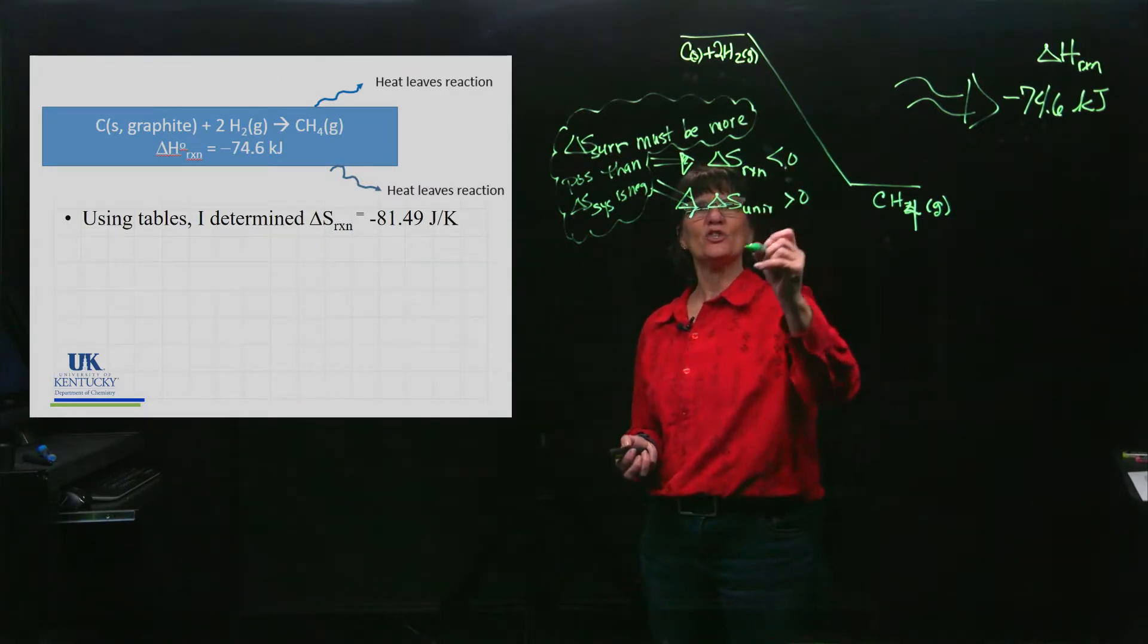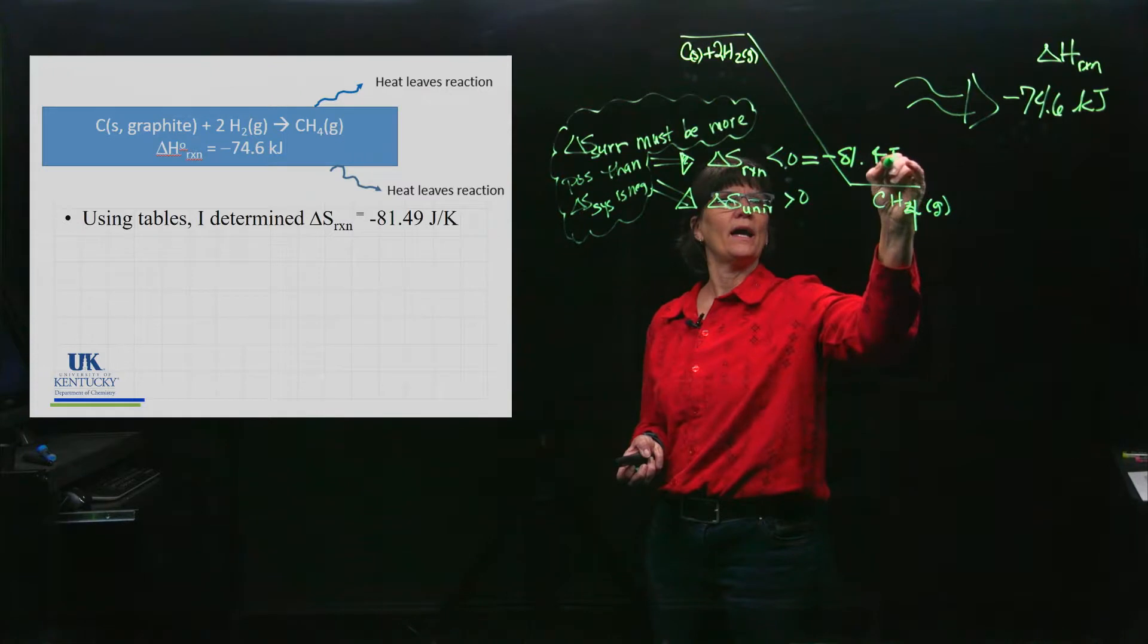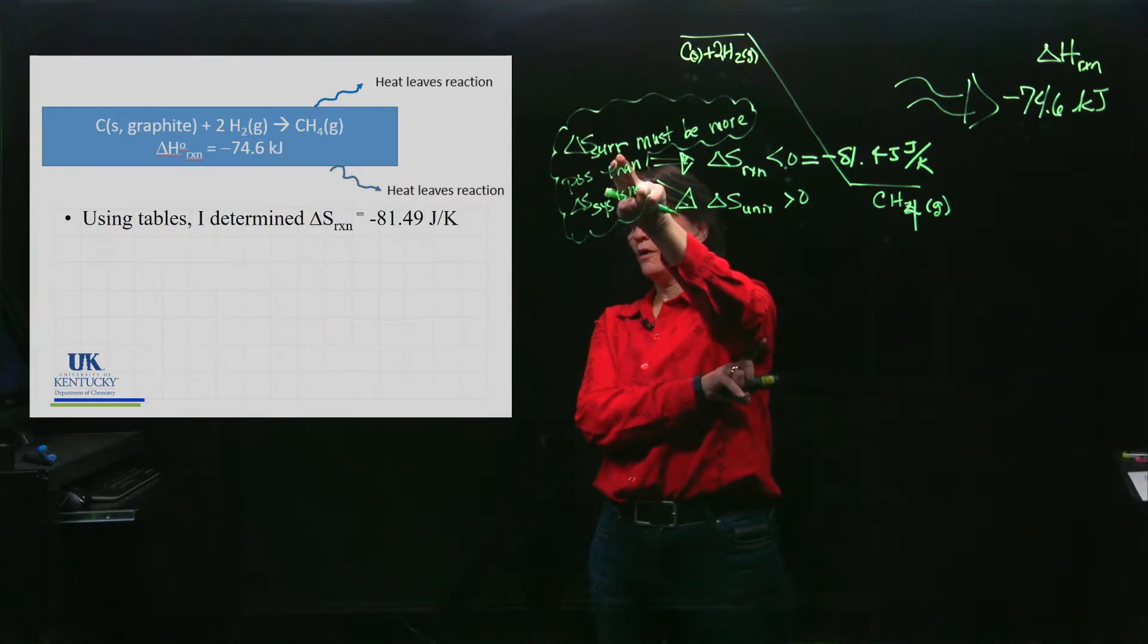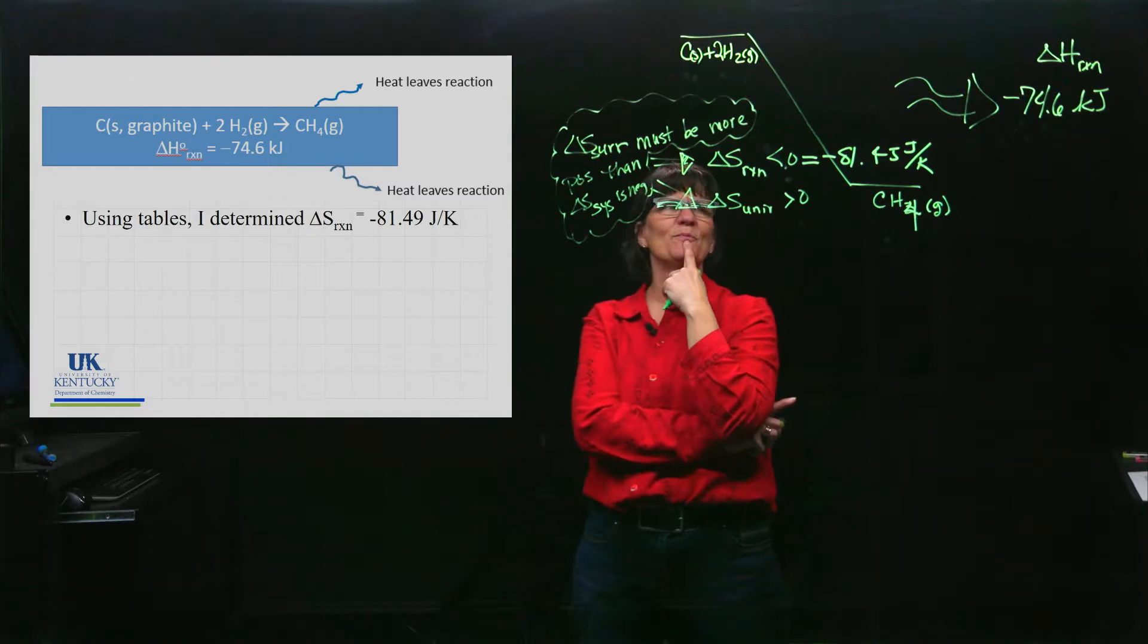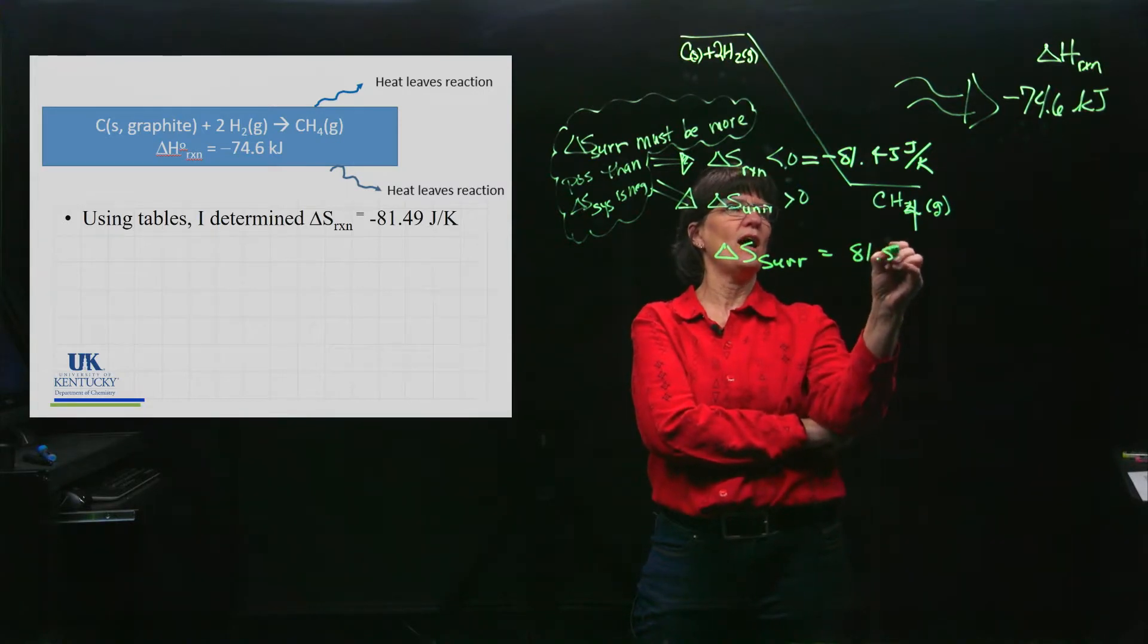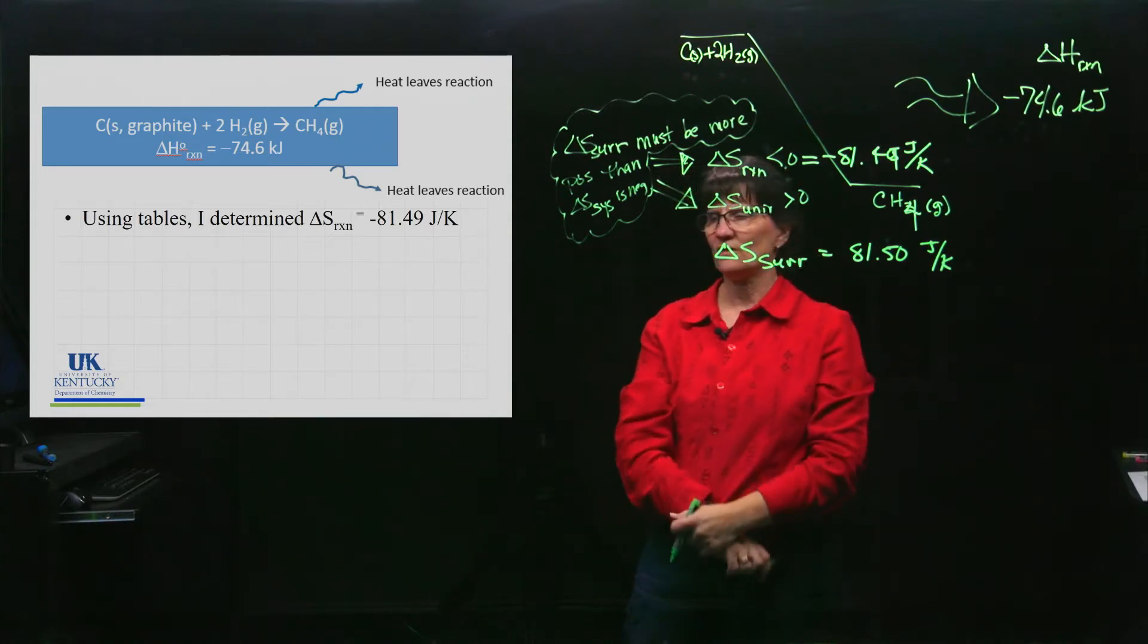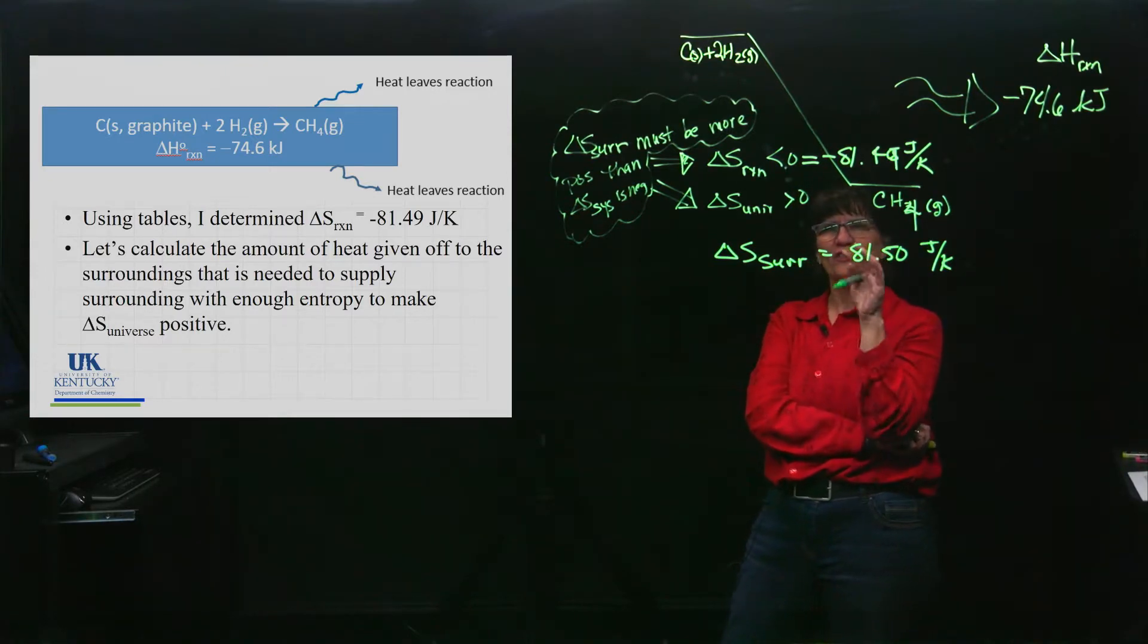I looked at some tables and I determined that the ΔS of the reaction is not only negative but is actually equal to negative 81.49 joules per Kelvin. I know that the ΔS of the surroundings must be more positive than that is negative. Let's figure out that relationship. This is what I need for the surroundings.